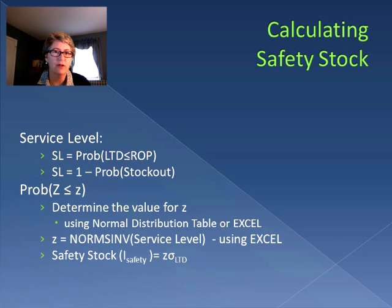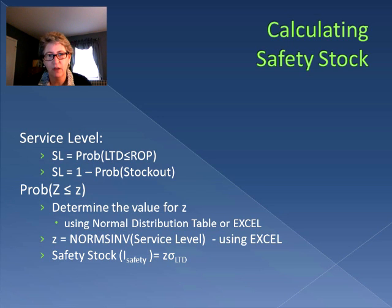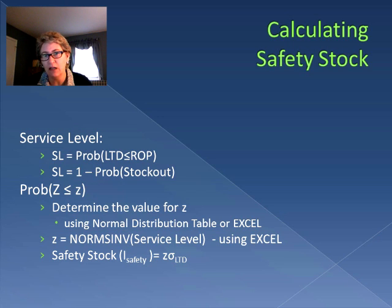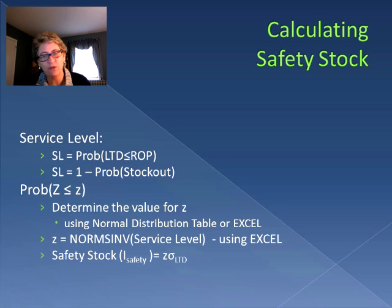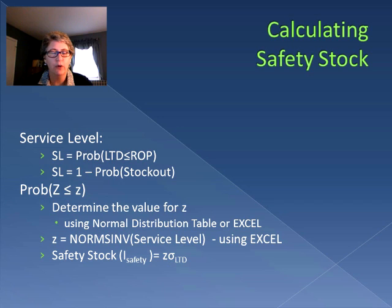To recap: our service level is the probability that the amount we use will be less than or equal to our reorder point, and it equals one minus the probability of a stockout. To determine safety stock, we need a value for Z — how many standard deviations above the mean — so we use either a normal distribution table or Excel. The preferred approach is Excel using the NORMSINV function: input the service level (the probability of not having a stockout), and it returns our Z statistic.